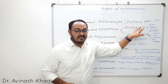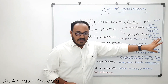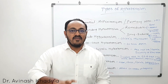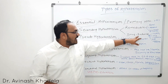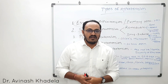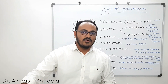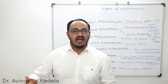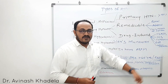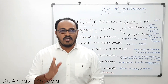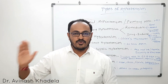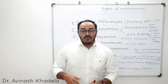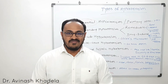Drug-induced hypertension occurs when medications mechanistically lead to a rise in blood pressure. For example, NSAIDs cause vasoconstriction and thus raise blood pressure — if taken for more than six to ten months, a patient may show elevated blood pressure. Oral contraceptive pills taken by females over a long period have also shown a rise in blood pressure in later age. Cyclosporine and tacrolimus, immunosuppressive drugs, cause venoconstriction.